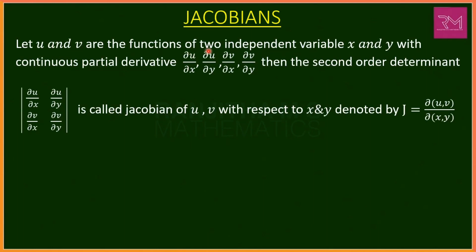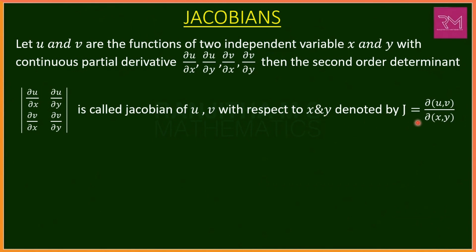First let us understand the definition of Jacobians. Let u and v be functions of two independent variables x and y with continuous partial derivatives del u by del x, del u by del y, del v by del x and del v by del y. Then the second order determinant — del u/del x, del u/del y, del v/del x, del v/del y — is called the Jacobian of the function u, v with respect to variables x and y, denoted by J = del(u,v)/del(x,y).